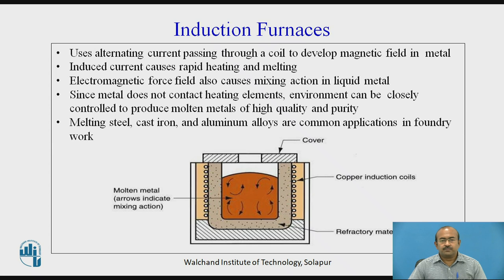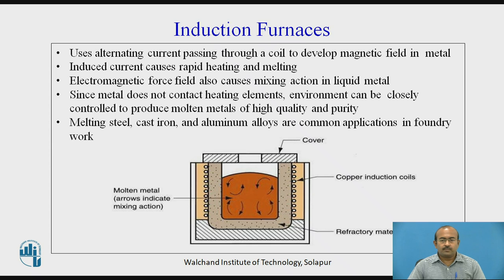The induction furnace uses alternating current passing through a coil to develop a magnetic field in a metal. The induced current causes rapid heating and melting. The electromagnetic force field also causes a mixing action in liquid metal. Since the metal does not contact the heating element, the environment can be closely controlled to produce molten metal of high quality and purity. Melting steel, cast iron, and aluminum alloys are common applications in foundry work. The figure shown on the screen is self-explanatory for the induction furnace.